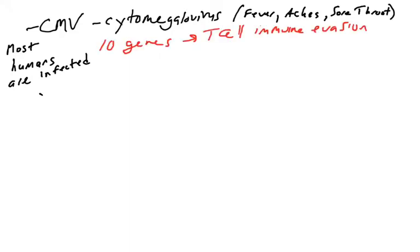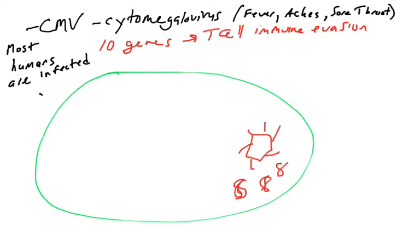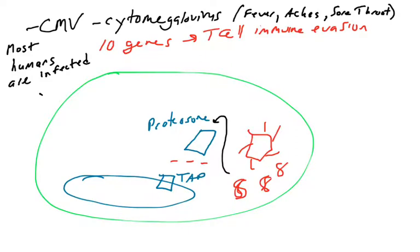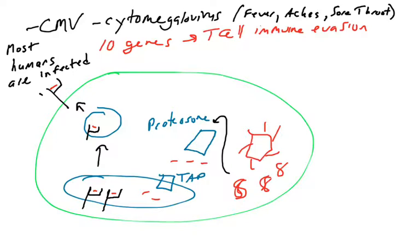CMV has at least 10 genes responsible for making proteins that interfere with T-cell recognition — and the mechanisms are really interesting. When cells are infected with a virus, viral protein is made and processed by the proteasome, broken down into peptides. Those peptides are sent into the ER through the TAP transporter, and MHC class 1 loads those peptides to present them to CD8 T-cells — that's how the immune system recognizes an infection. With CMV-infected cells, CMV produces proteins that inhibit this process at a number of different steps.